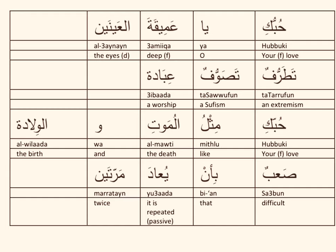So the full poem reads: 'Hubbuki ya amiqata al-aynayn' — Loving you, O you with the fathomless eyes — 'tatarrufun, tasawwufun, ibadah' — is extreme, is mystic, is worship. 'Hubbuki mithlu al-mawti wal-wiladah' — Loving you is like death or birth. 'Sa'bun bi-an yu'ada marratayn' — It defies repetition.